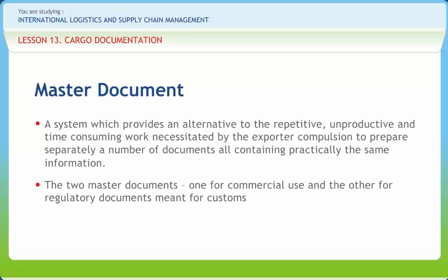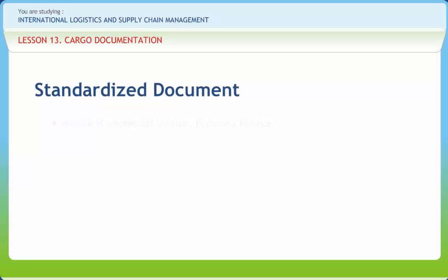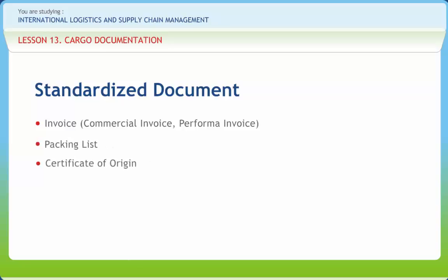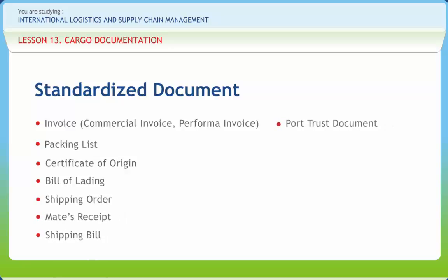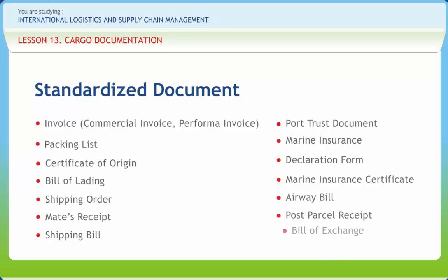Earlier there were a plethora of commercial documents which include, among others, invoice, packing list, intimation for inspection, insurance declaration form, shipment advice, and the exchange control declaration form. The standard documents are: commercial invoice or proforma invoice, packing list, certificate of origin, bill of lading, shipping order, mate's receipt, shipping bill, port trust document, marine insurance declaration form, marine insurance certificate, airway bill, post parcel receipt, bill of exchange, and bill of entry. Each of these documents can be reproduced from the same master by using the relevant mask.